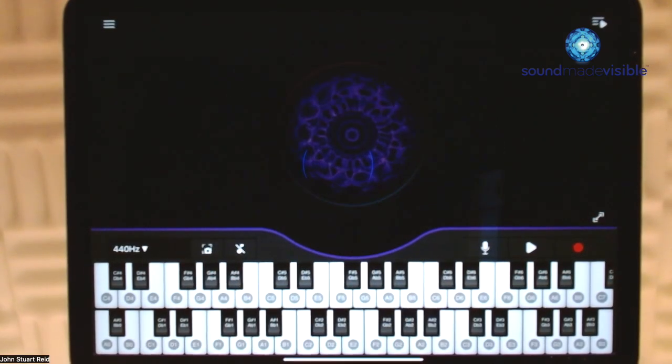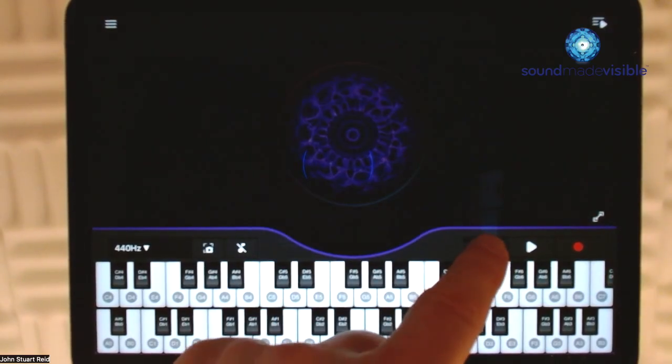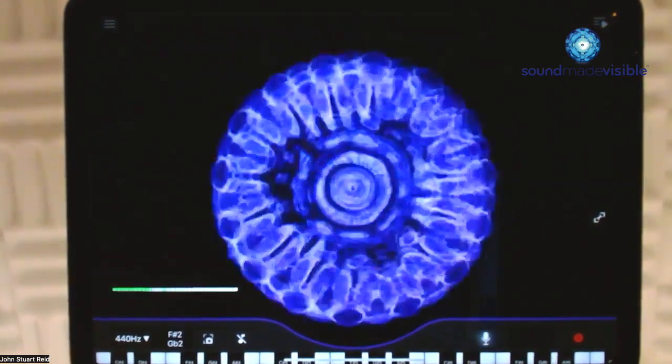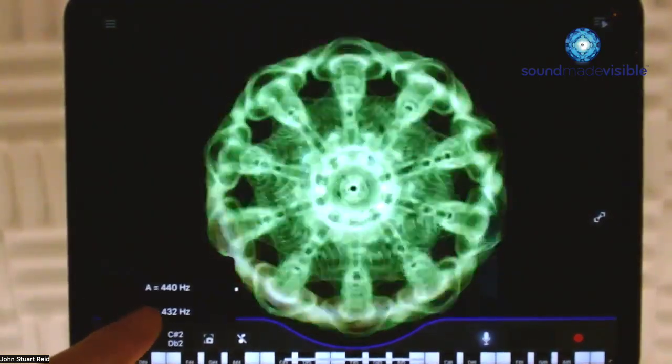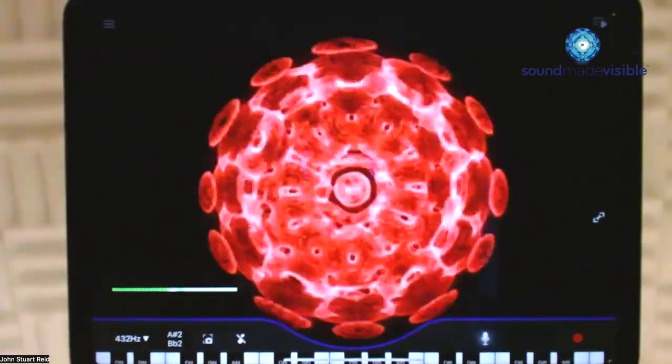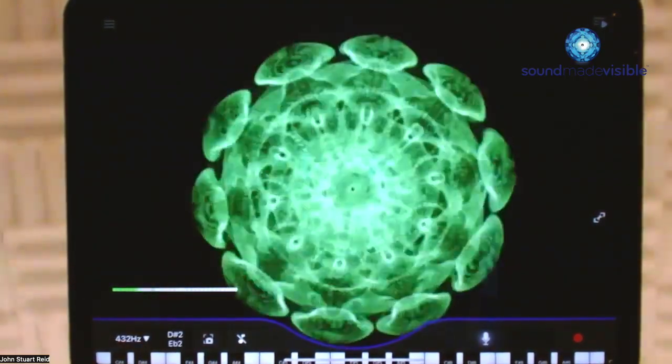For those users who prefer 432 hertz, this can easily be selected at the bottom left-hand corner here. Choose 432. Now all the imagery will be in 432 hertz tuning.